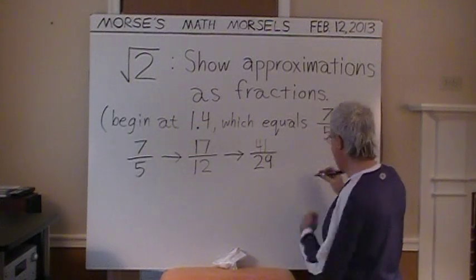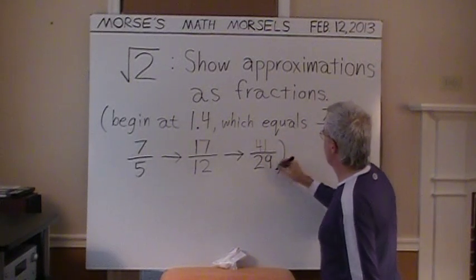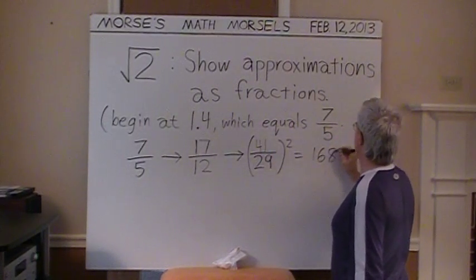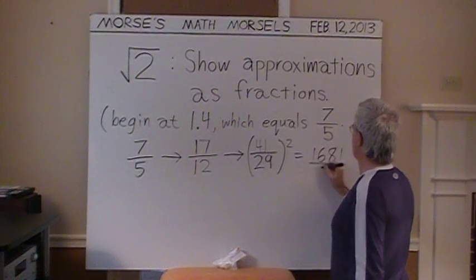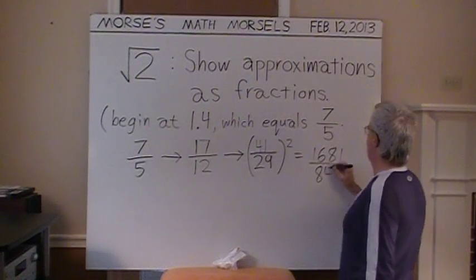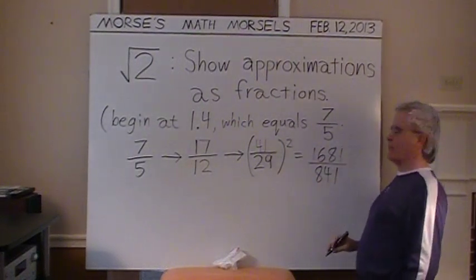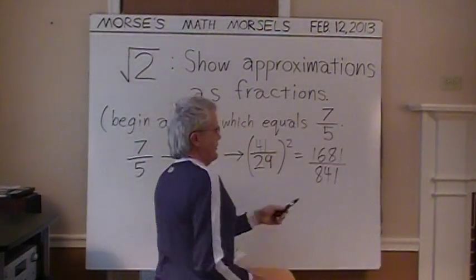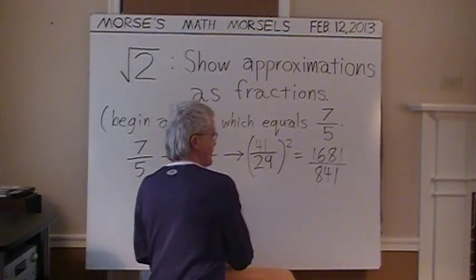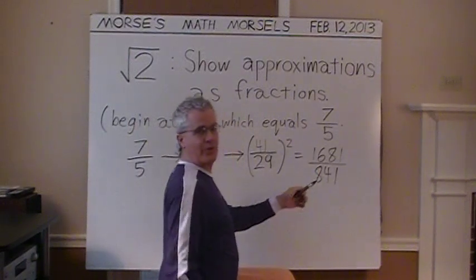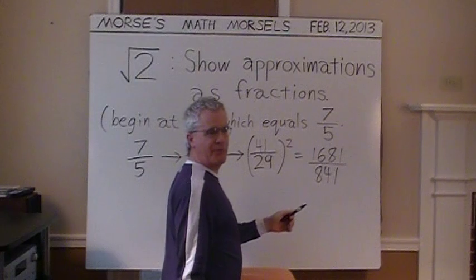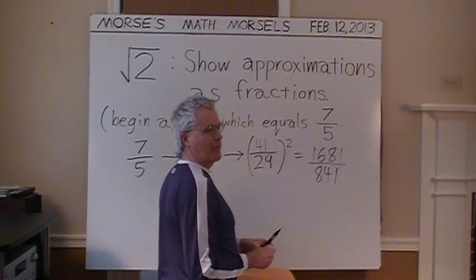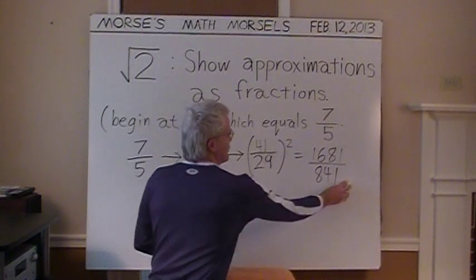Well, if we square it, square this, comes out 1681 over 841. That's even closer to 2 yet. The numbers are getting larger, and notice that one number just misses being exactly double the other number. The numerator is just short of being twice the denominator.